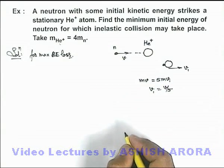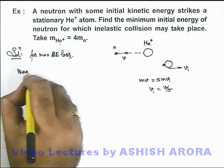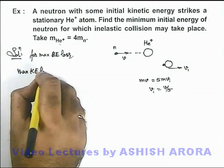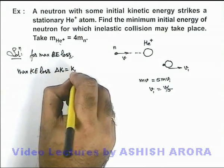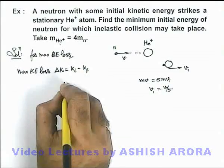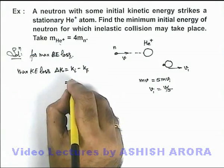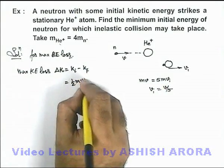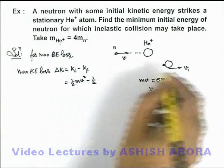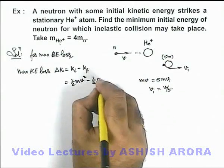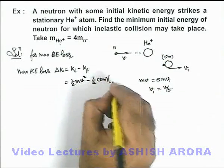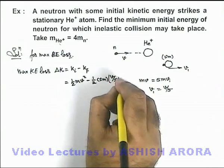Now in this situation we can find out the maximum kinetic energy loss. Delta K equals K initial minus K final. Initial kinetic energy is half mv squared minus final kinetic energy is half, total mass of the system here is 5m, so it can be written as 5m multiplied by v by 5 whole squared.